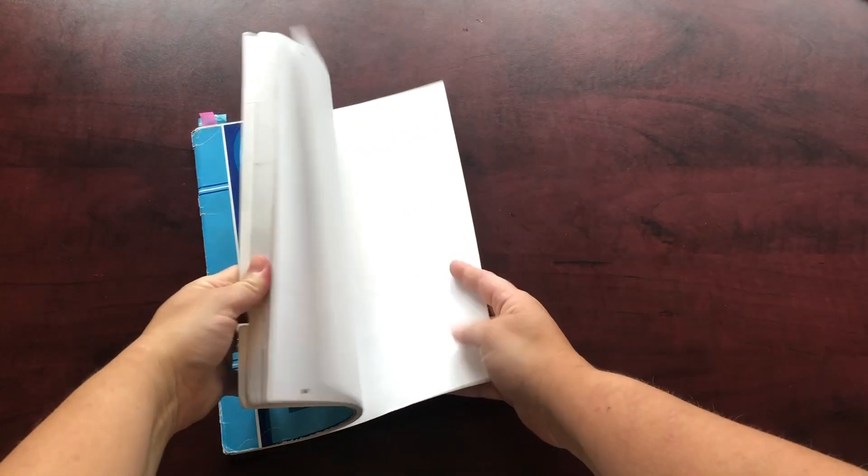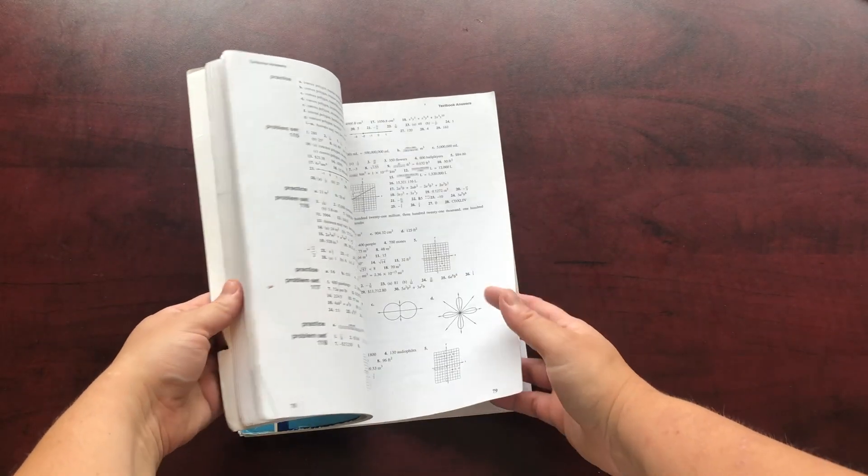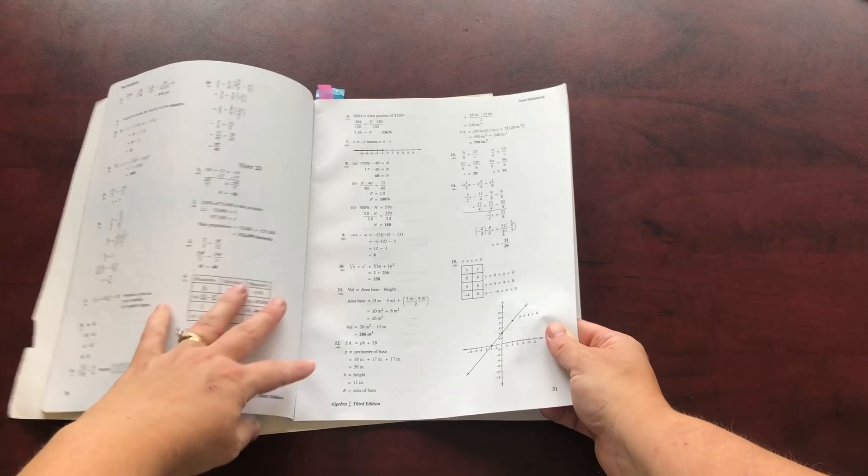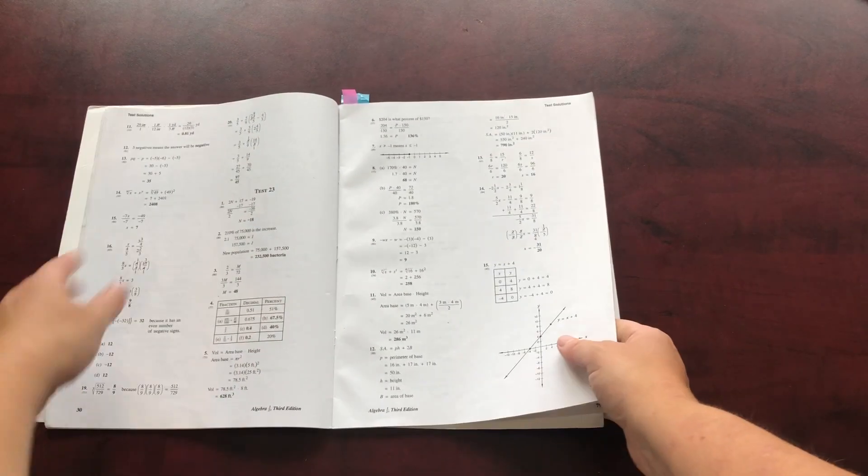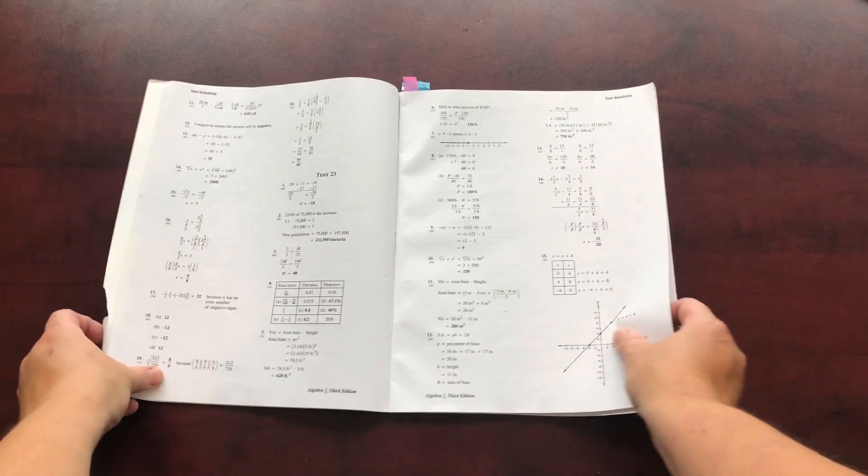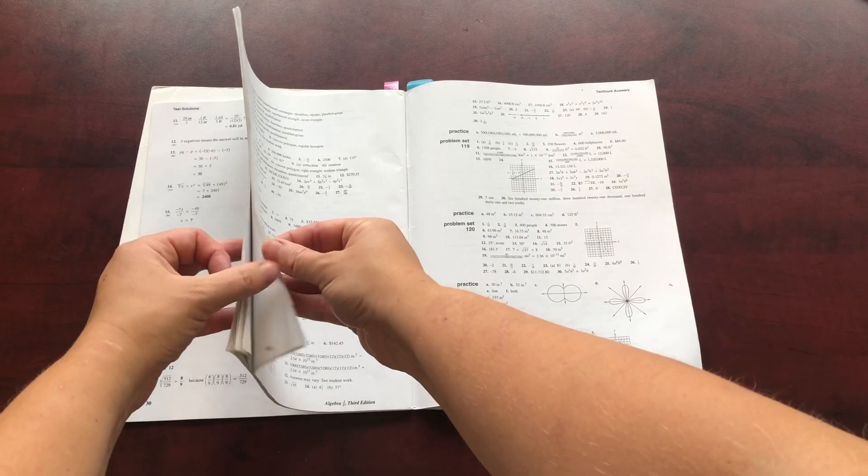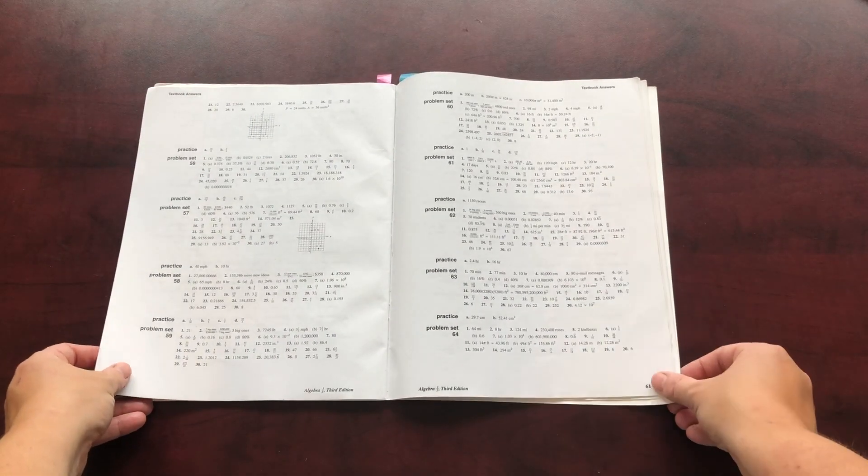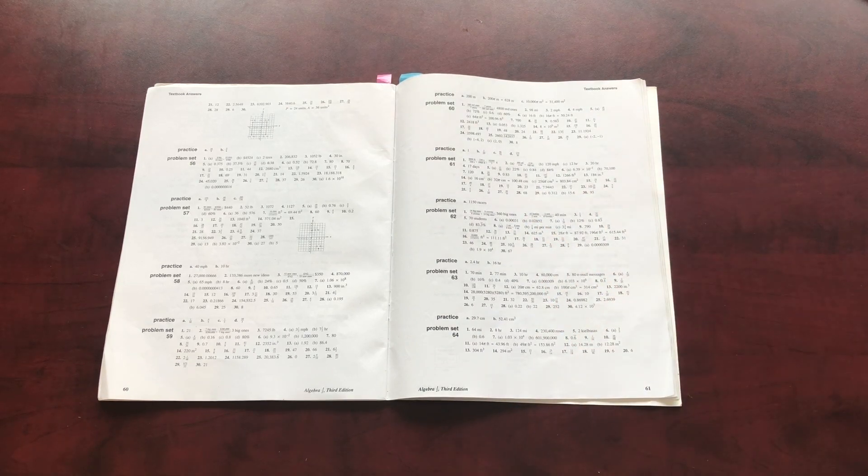Let's see if there's a page number on this one. 85, so less than 90 pages. And what this is, is in the beginning are the answers to the tests. And they actually have it worked out. It tells you how to answer those questions. And then in the back here, they have the answers to those daily problem sets and the practice. These are just the answers. It doesn't explain how to answer the question.